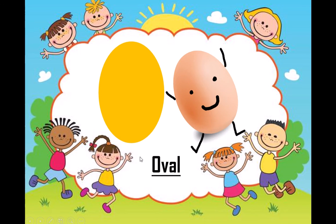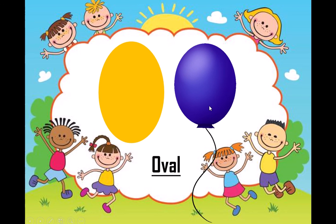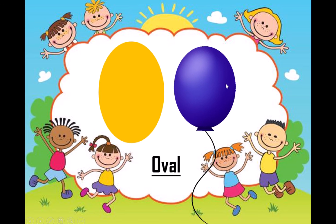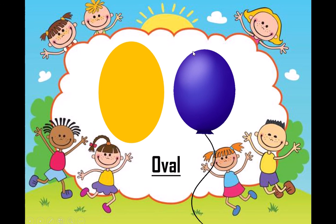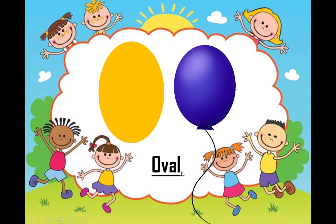Here we have oval. It has no corner, and this is called oval. Yes, this is an egg — an egg has an oval shape. There is a balloon, and balloon also has an oval shape. Which shape is this? Oval. Balloon has an oval shape.